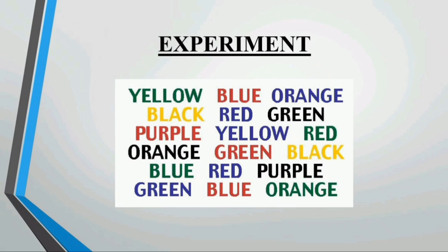John Ridley Stroop presented a list in front of the participants in which all the colors were written, but they were written with different colors. Like here, yellow, blue, orange, black, red, green, purple.